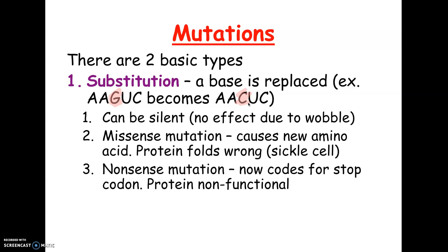So what will that cause to happen? This example is in RNA, but this could be a DNA mutation too. It could be a silent mutation, meaning there's no effect. That's because of wobble — sometimes A-A-G and A-A-C might both code for the same amino acid, in which case changing that letter will not affect the outcome. The amino acids would be the same.